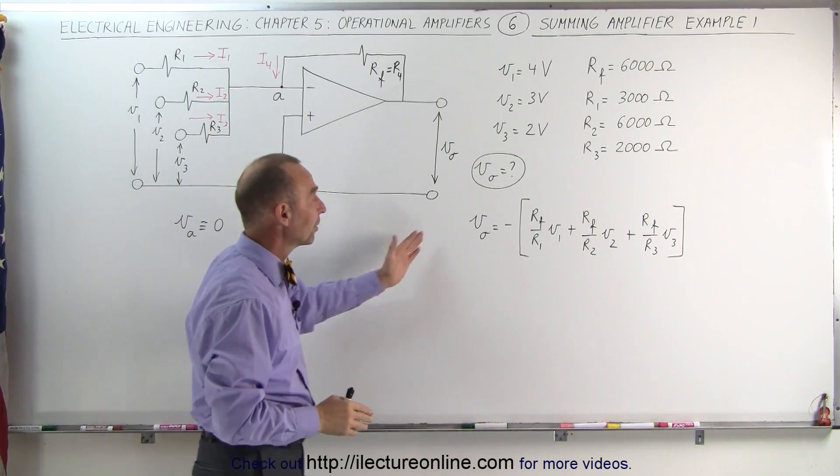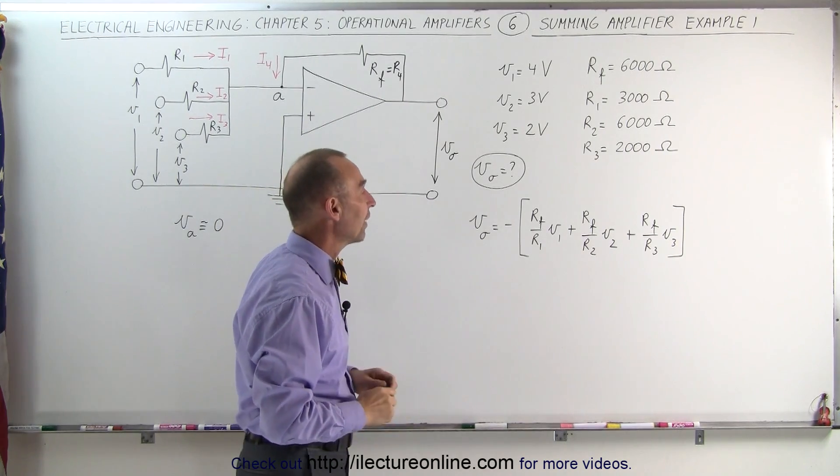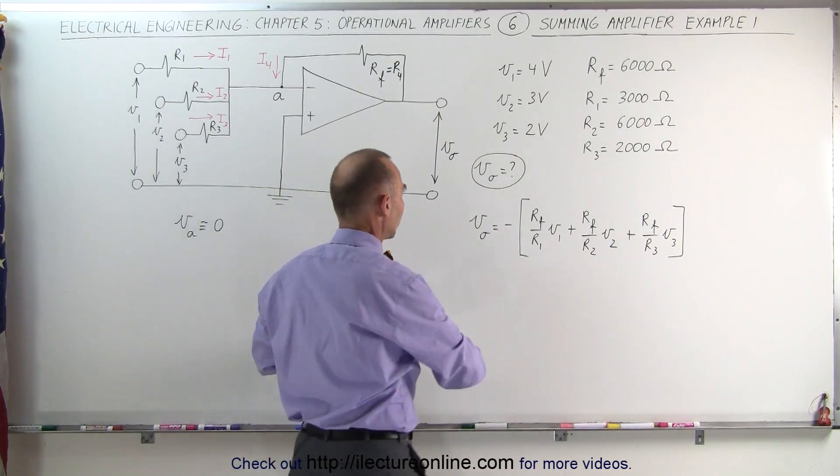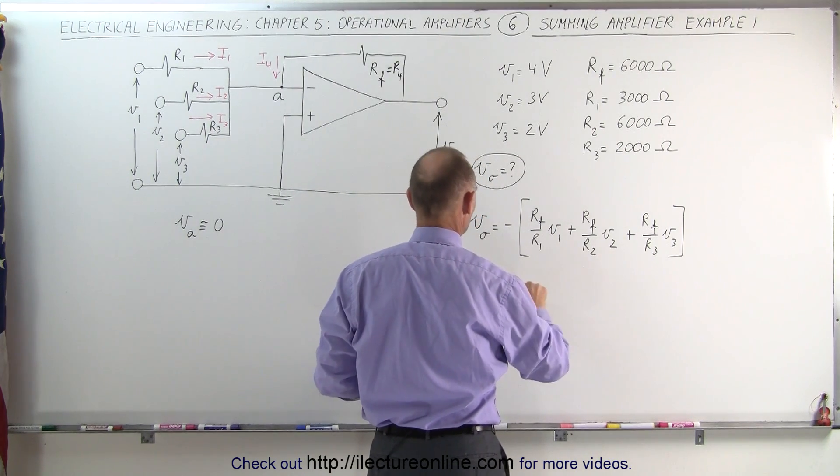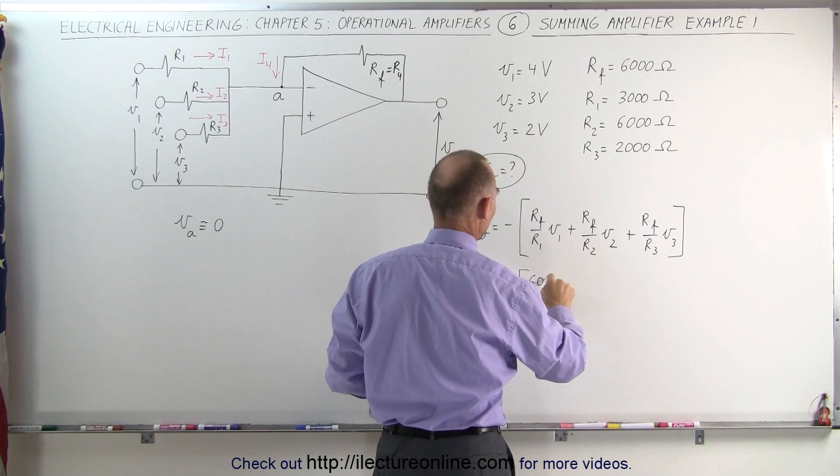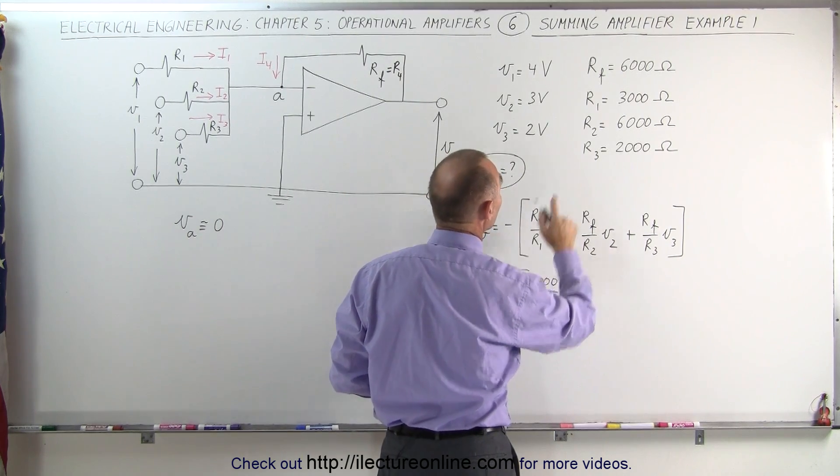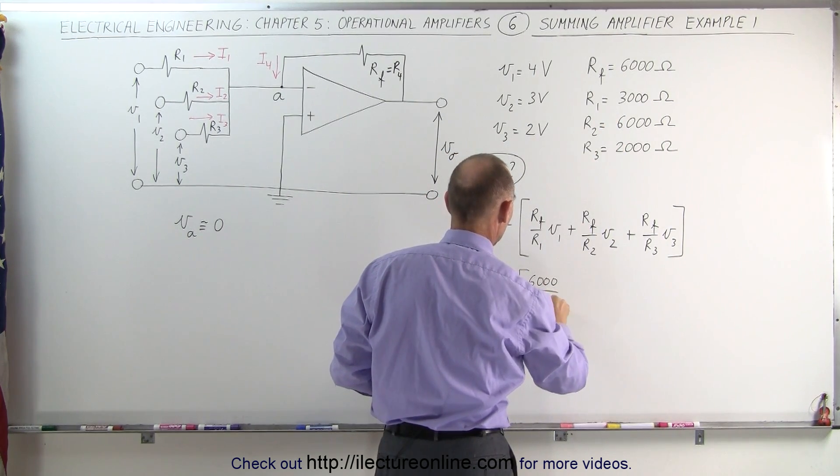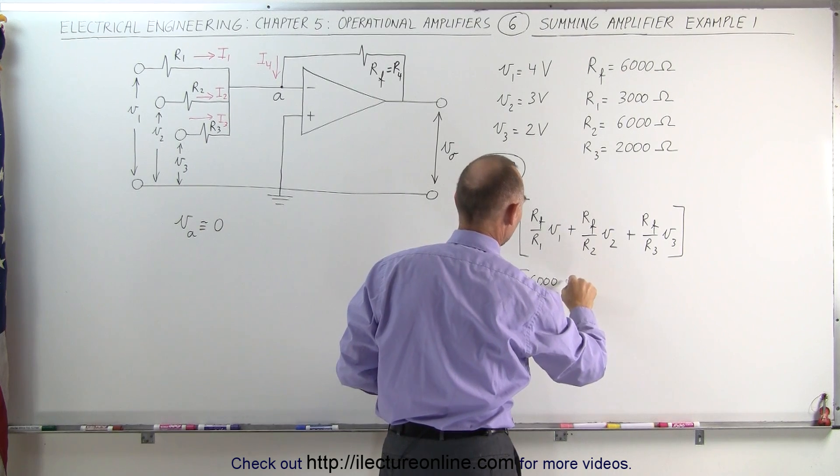Here's the equation that we found on the previous video. Let's plug in the values and see what we get. So RF, which is 6,000, over the first resistance, which is 3,000, times the input voltage of 4 volts.